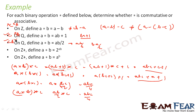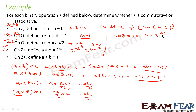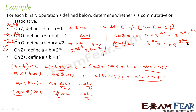Next, a * b = 2^(ab) on Z+. Since 2^(ab) = 2^(ba), it is commutative. For associativity, a * (b * c) = a * 2^(bc) = 2^(a · 2^(bc)). And (a * b) * c = 2^(ab) * c = 2^(2^(ab) · c). Both numbers are different, so it is not associative.